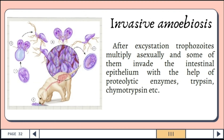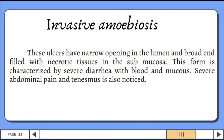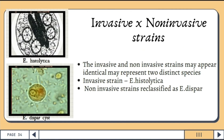For invasive amoebiasis, after excystation, trophozoites multiply asexually, and some invade the intestinal epithelium with the help of proteolytic enzymes such as trypsin and chymotrypsin. These ulcers have a narrow opening in the lumen and a broad end filled with necrotic tissues in the submucosa. This form is characterized by severe diarrhea with blood and mucus, and severe abdominal pain and tenesmus. The invasive and non-invasive strains may appear identical and may represent two distinct species.